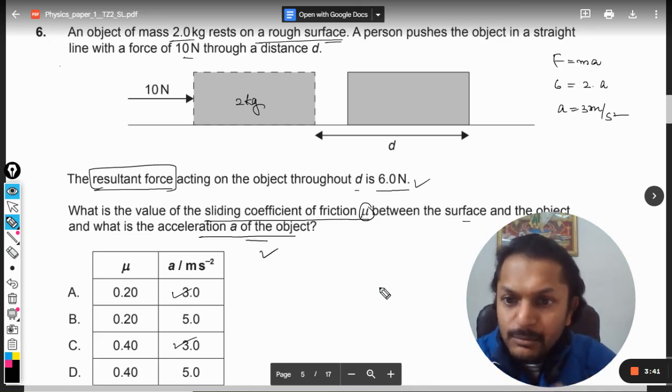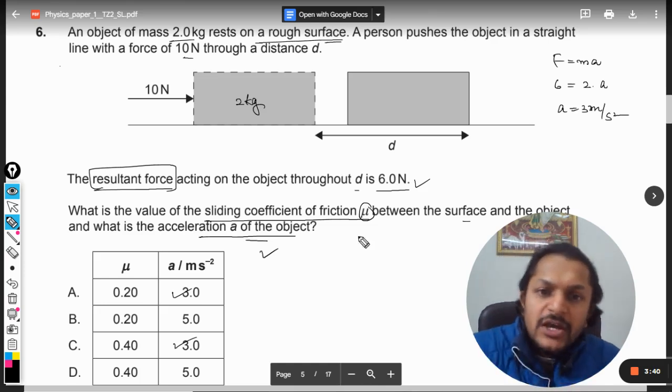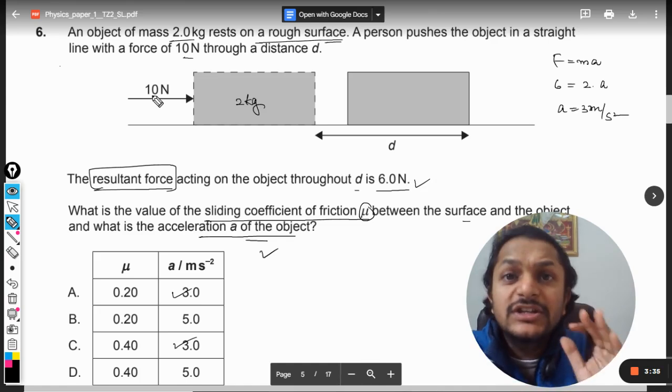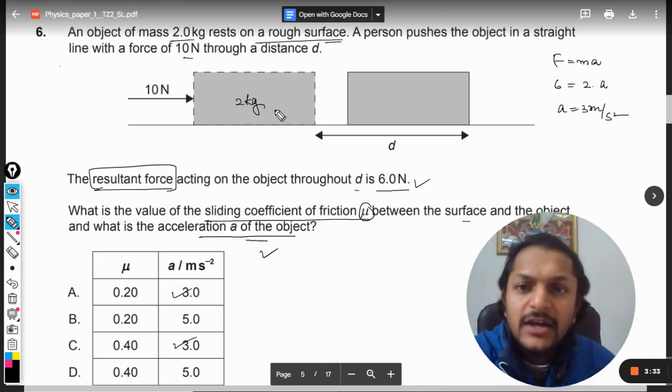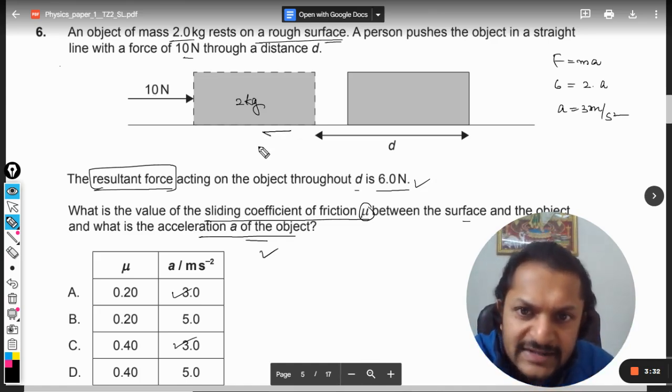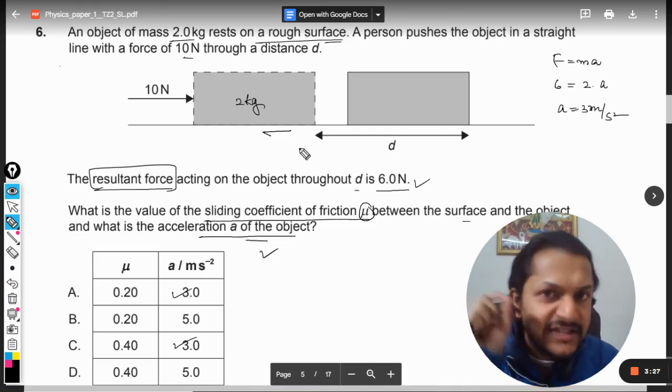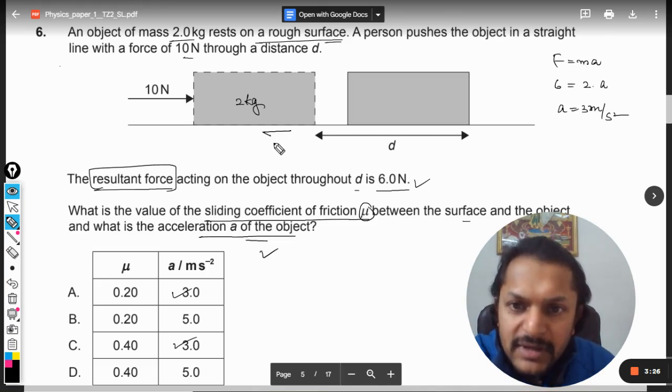So let us now think about μ. What is μ? μ is the friction. So what is happening here? You see, 10 Newton is the force that we have actually applied, but there is a friction force that is acting here so that the net force becomes 6 Newton.